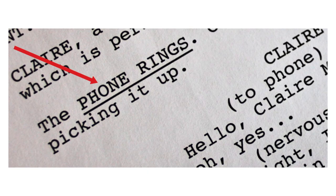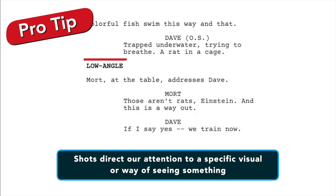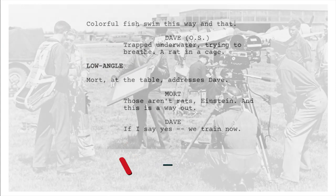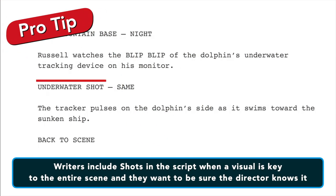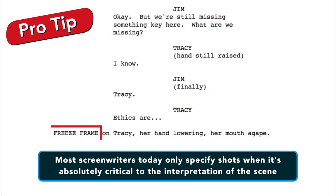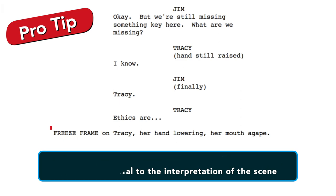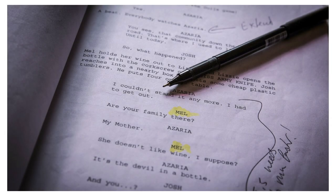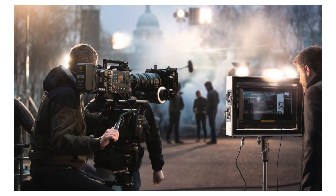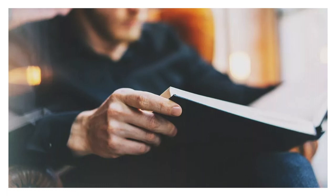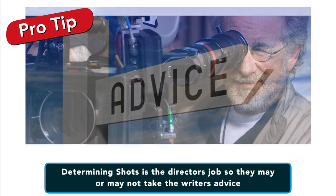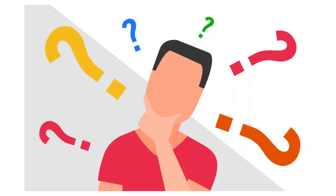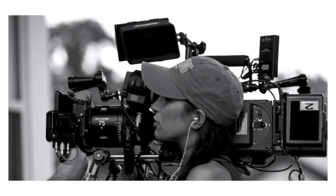Number eight are specific shots. Formatted like a caps-locked action line, shots direct our attention to a specific visual or a way of seeing something. Much like transitions, these were much more common in the old days of Hollywood. In modern times, they're typically used by writer-directors, or when a writer feels that a visual is key to the entire scene. Most screenwriters today only specify shots when it's absolutely critical to the interpretation of the scene. Keep in mind that by indicating a particular shot in a script, you're reminding the reader this is a movie with cameras, which can take the reader out of the story — so use this technique sparingly. Also, determining shots is the director's job, so they may or may not take the writer's advice.